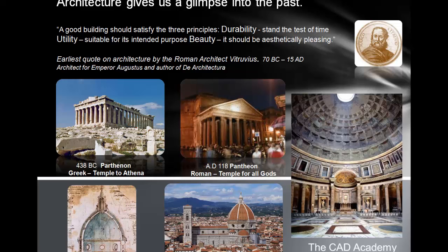One of the first quotes from an architect was from the Roman architect Vitruvius. He lived between 70 BC and 15 AD and he wrote 10 books on architecture. He said a good building should satisfy three principles: it should be durable — it needs to stand the test of time; utility — it should be suitable for its intended purpose; and beauty — it should be aesthetically pleasing.